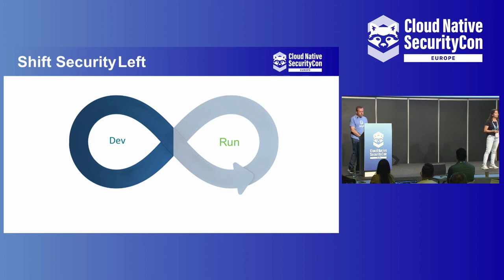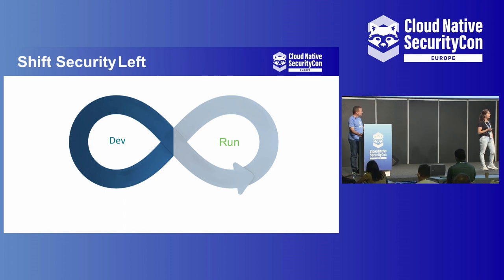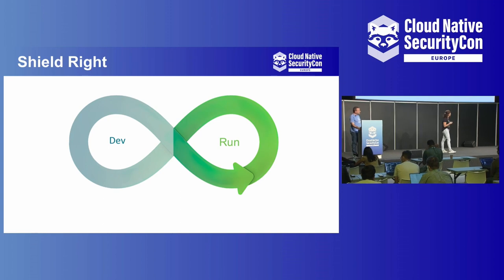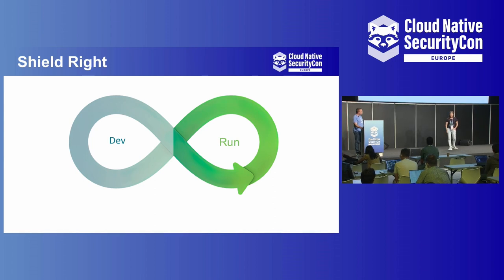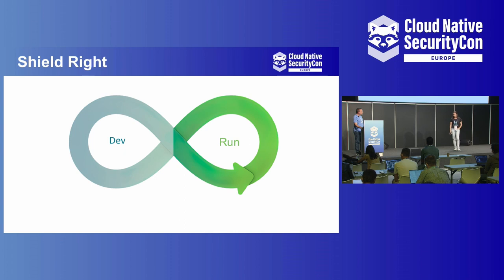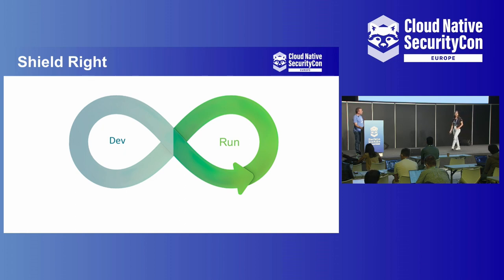To detect errant behavior, we want to look at the other side of the infinite loop — we want to look at production environments. Here is where we want to detect errant behavior when we have our workloads running in production. Before we knew the Log4j library had such a big vulnerability, or even the most recent one, Spring4Shell, we didn't know our applications were at risk. Many applications running in production right now are affected by vulnerabilities that are still hidden or haven't been detected yet. So how can we be sure that we are protected?